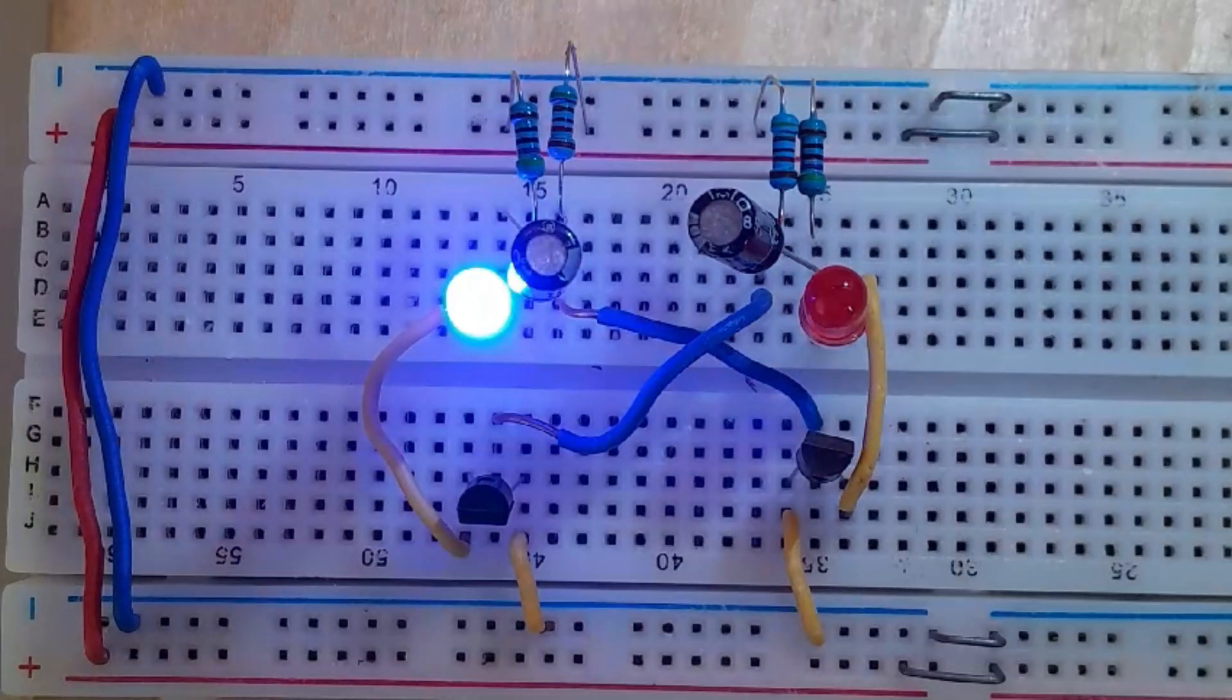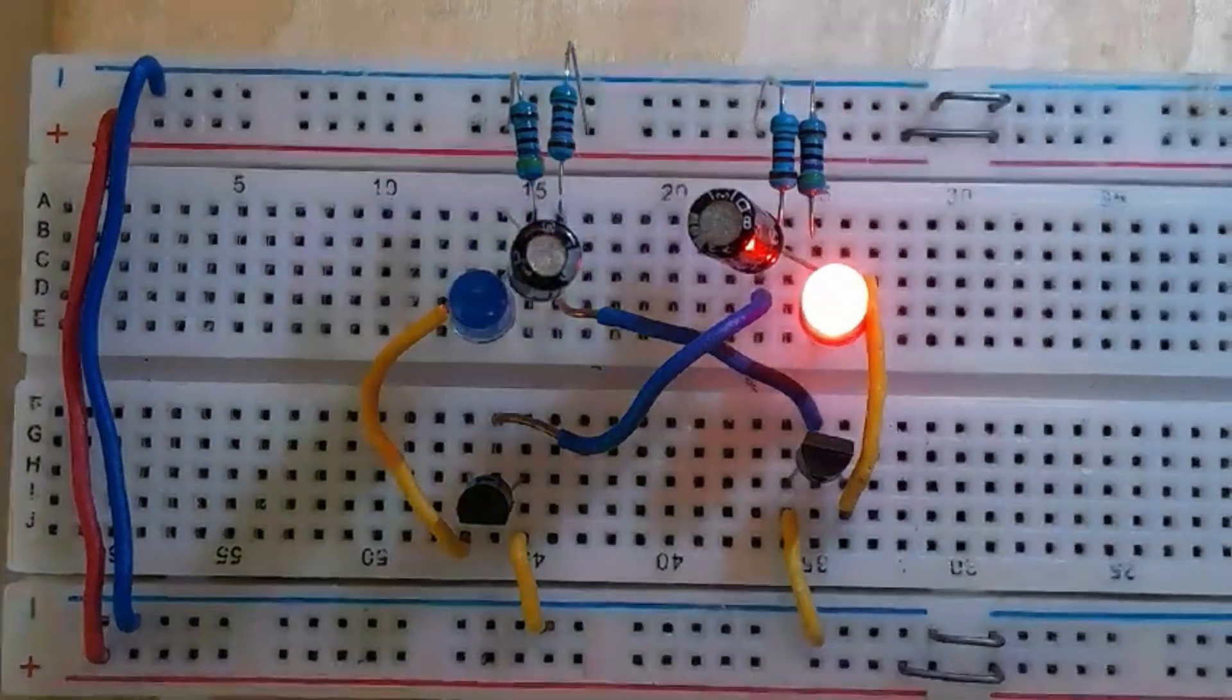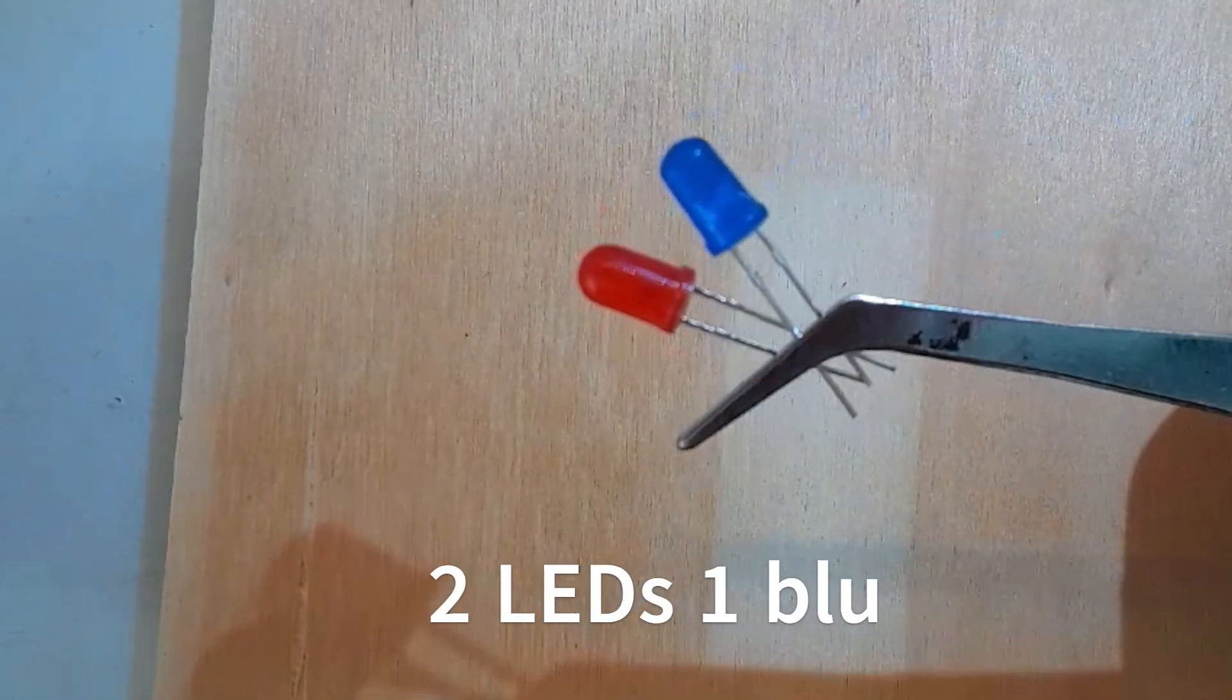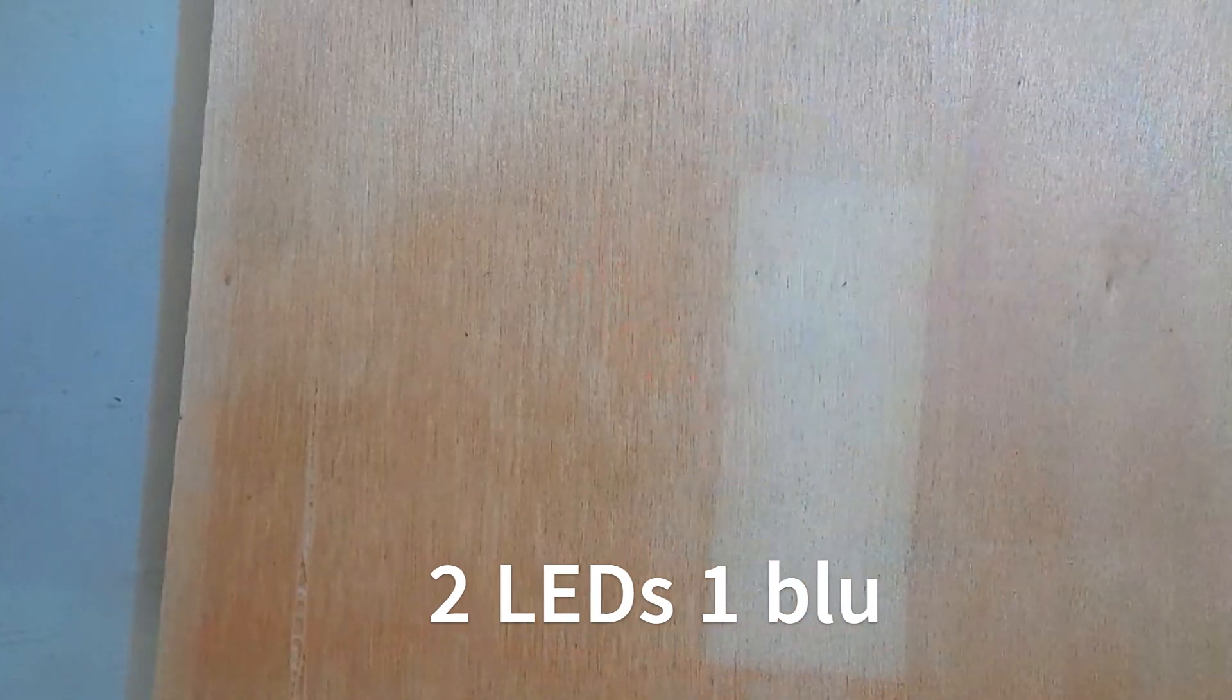Hello everyone, today I'm going to show you how to make a blinking LED circuit on a breadboard. Here's what you need: two LEDs, one blue and one red.